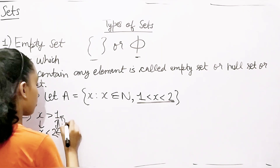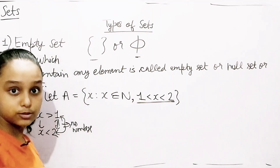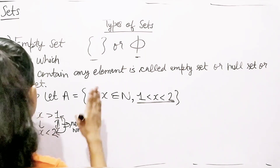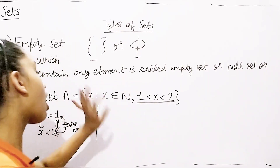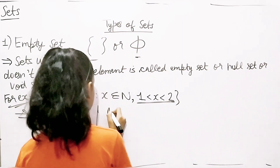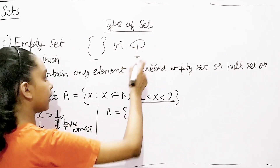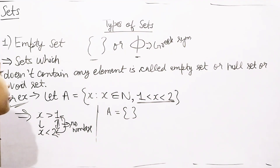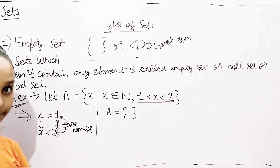So we can say there are no numbers between 1 and 2. This means that this set is going to be our empty set. So set A equals empty braces — no elements at all — or we can just use phi, the Greek symbol used in empty sets. Through this example, we can understand empty sets clearly.